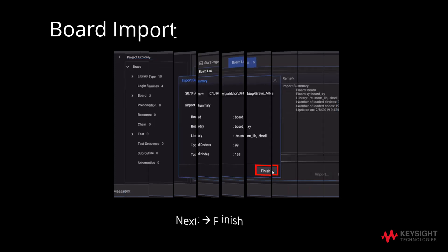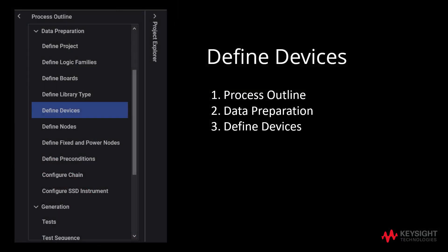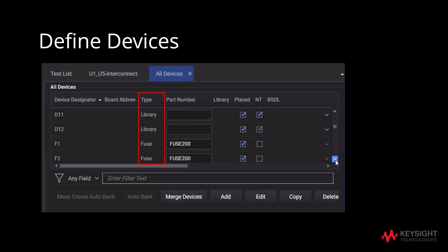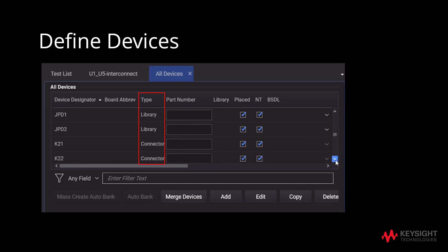Following that, click Finish. Now we will move on to Define Devices. We will proceed to Define Devices by clicking on Process Outline, followed by Data Preparation and finally Define Devices. The types of devices will be listed under All Devices and showcased under the Type heading. The types that can be defined include capacitor, connector, diode, fuse, inductor, jumper, potentiometer, resistor, switch, and transistor. It will also showcase the part number in the BSDL files.